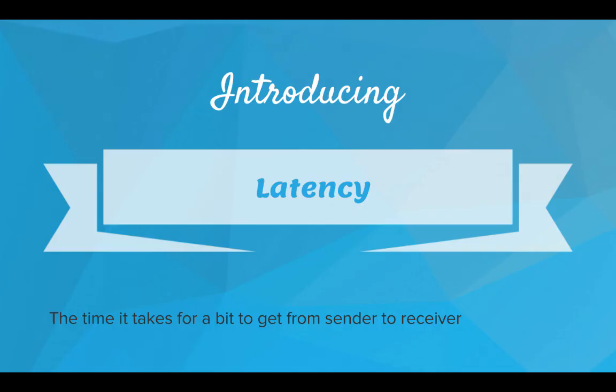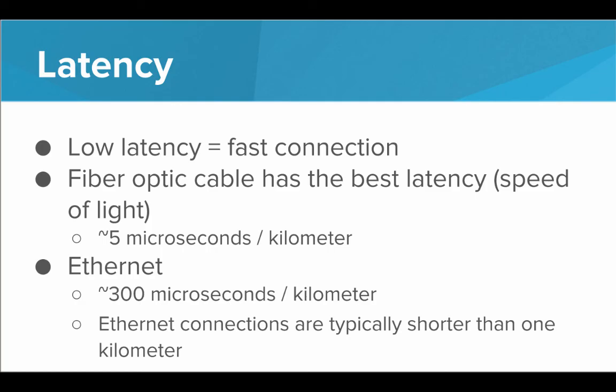There's one more important term when we're talking about networks and sending data, and that is latency. Latency is the time it takes for a single bit to get from sender to receiver. When it comes to latency, we want low latency. If we have a low latency, that is a very fast connection. A fiber optic cable has the best latency because it's using light, so it's traveling close to the speed of light. Using a fiber optic cable, one bit can travel a full kilometer in only five microseconds. With ethernet, on the other hand, it takes about 300 microseconds to travel one kilometer. We should note that ethernet connections are typically shorter than one kilometer. But should the connection be one kilometer, that is how long a bit would take to travel.